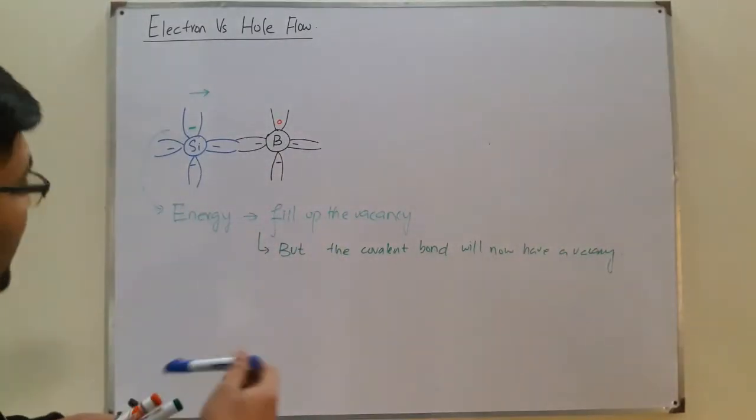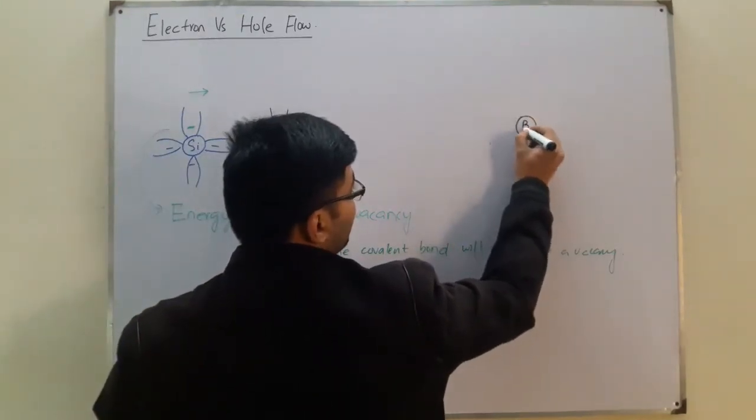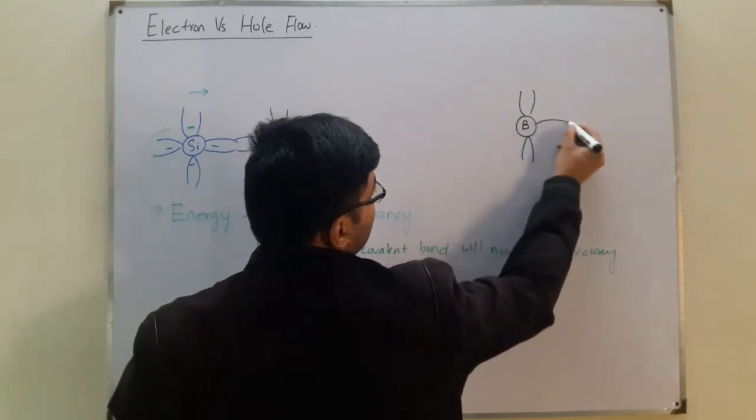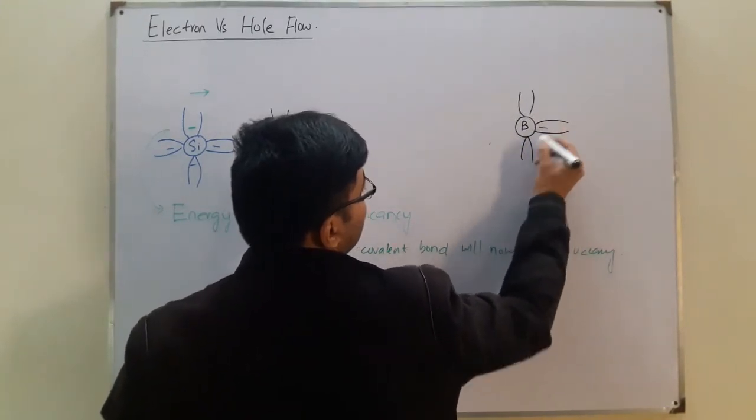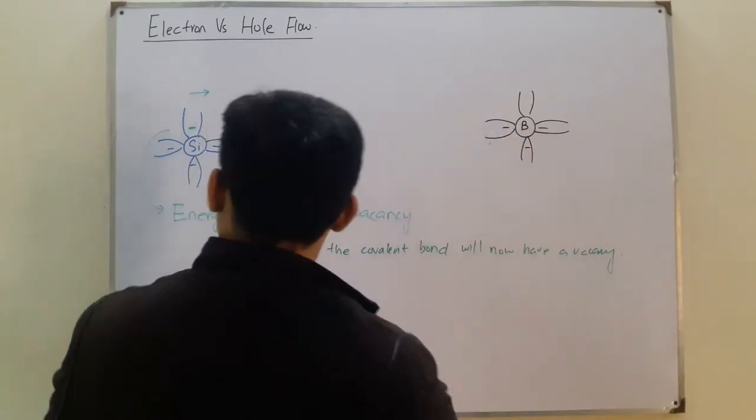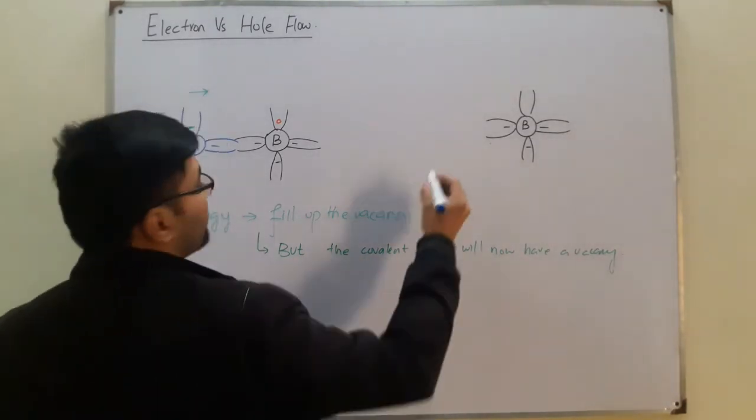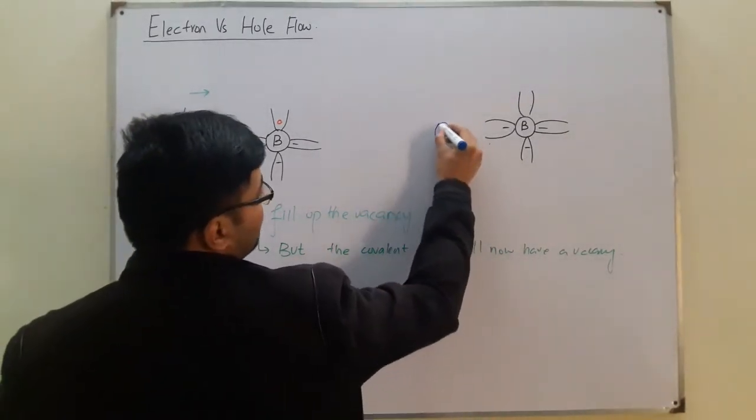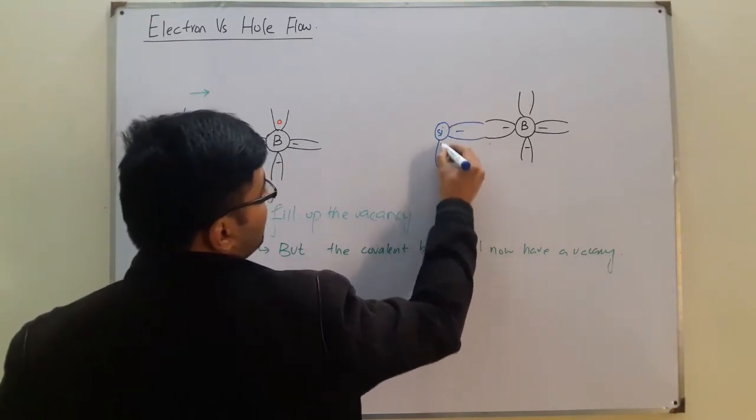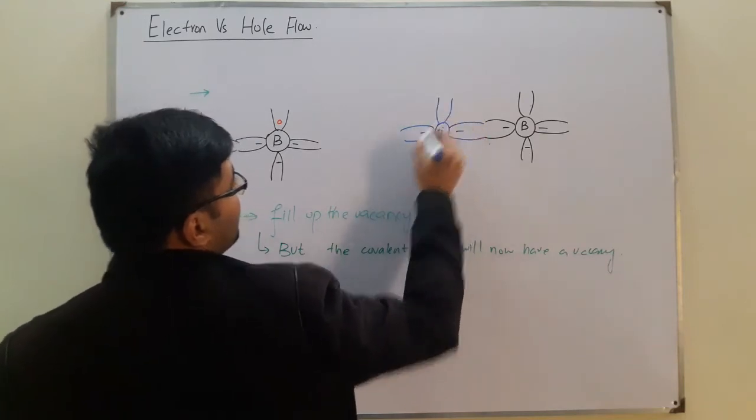Let me show it to you over here. If this was the boron atom, like this, and the silicon with the blue color. So the covalent bond like this. So now what did we see?